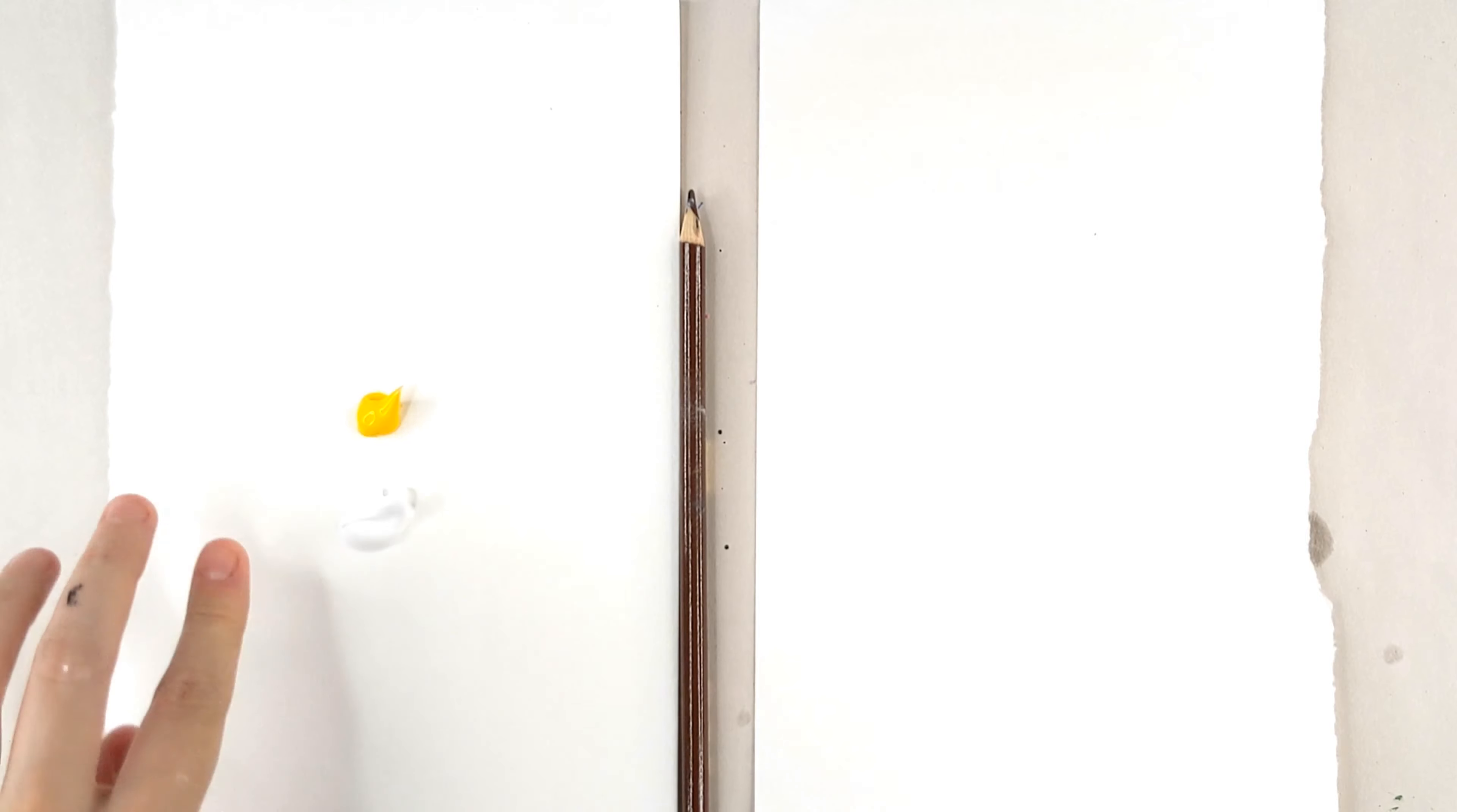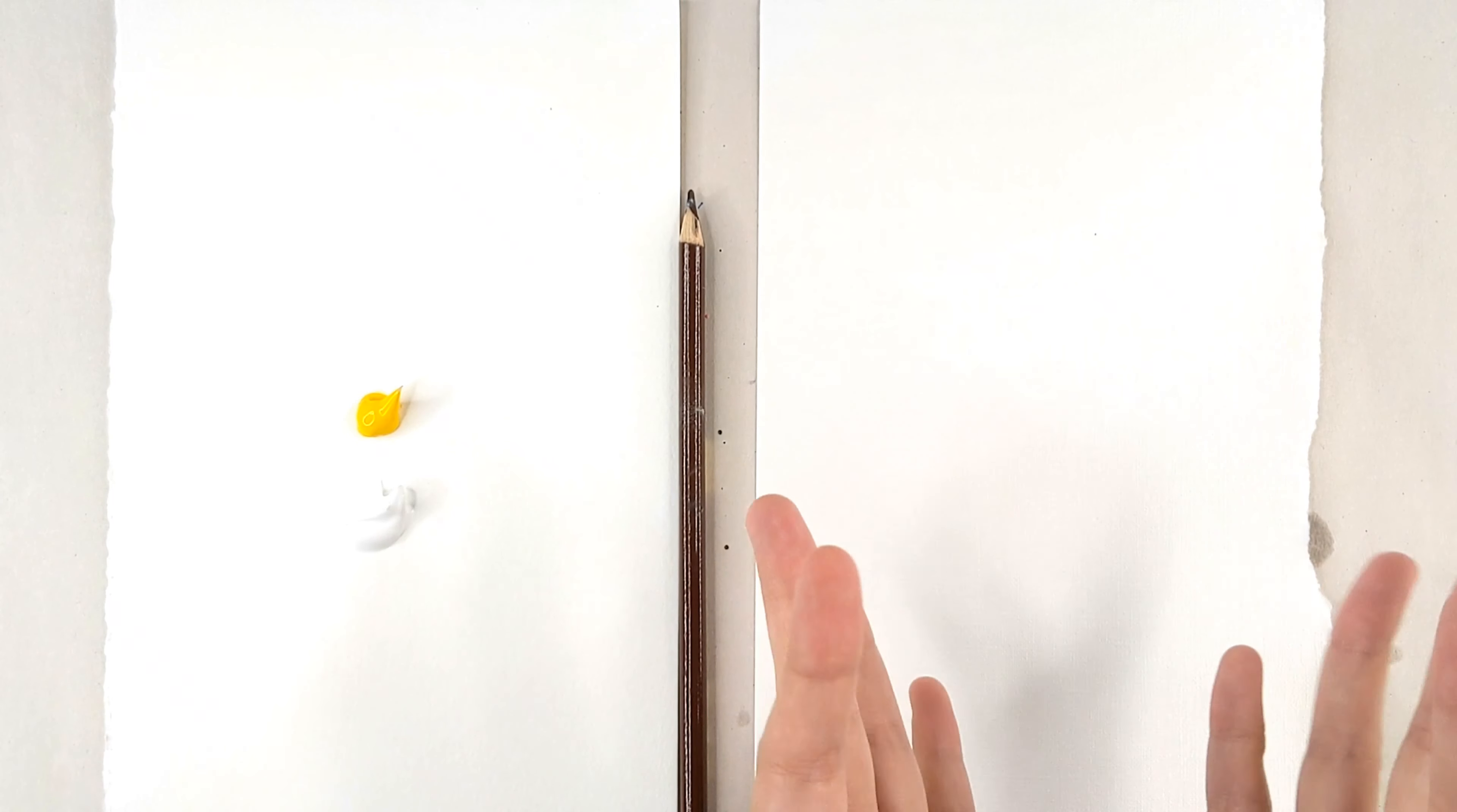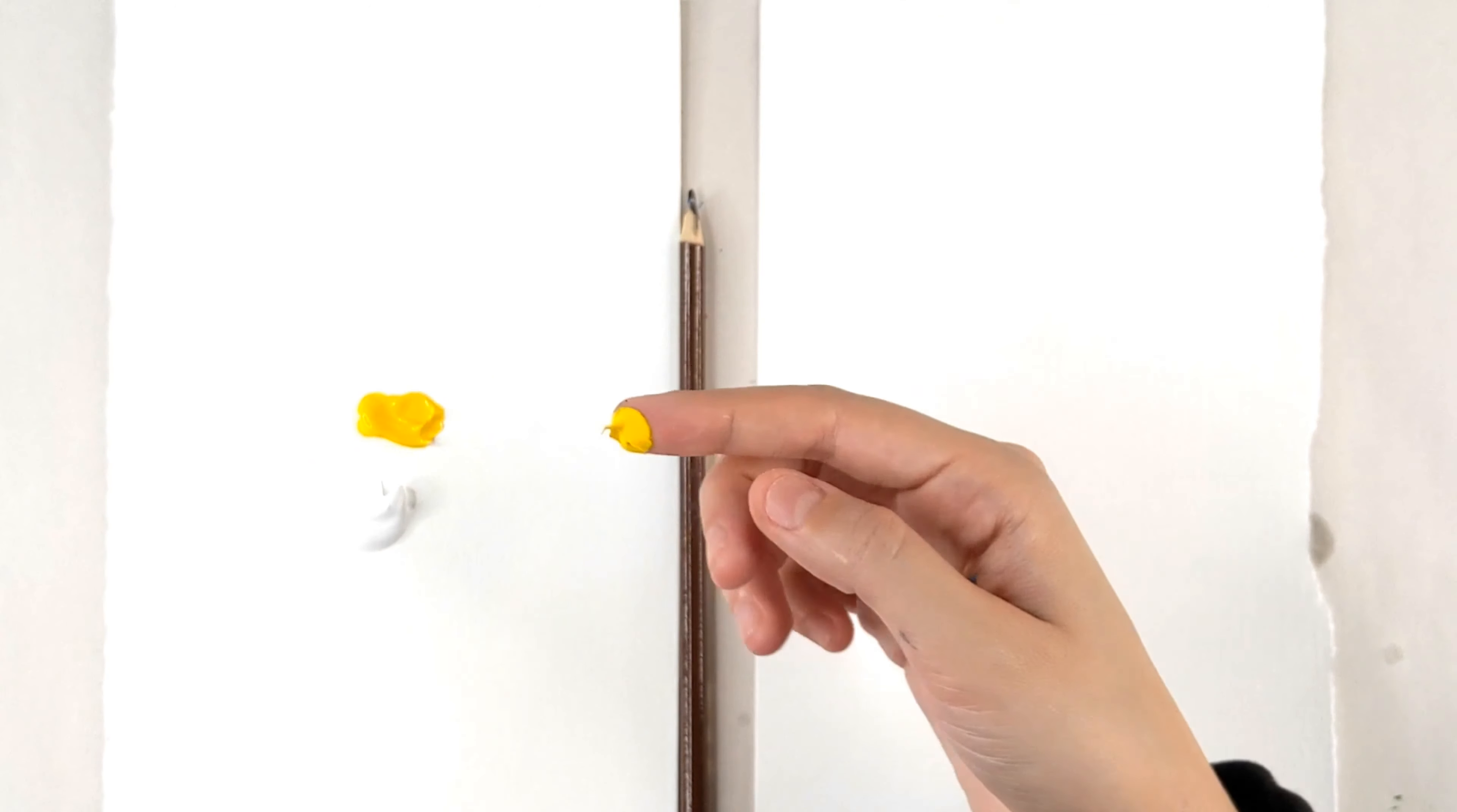These are the colors that you'll be needing. Yellow, white, some paper, a pencil, and your fingers. This painting is super easy and you only need two colors. Be sure to have a little bit of water on the side though because you're going to need it to help make this yellow just a little bit thinner.